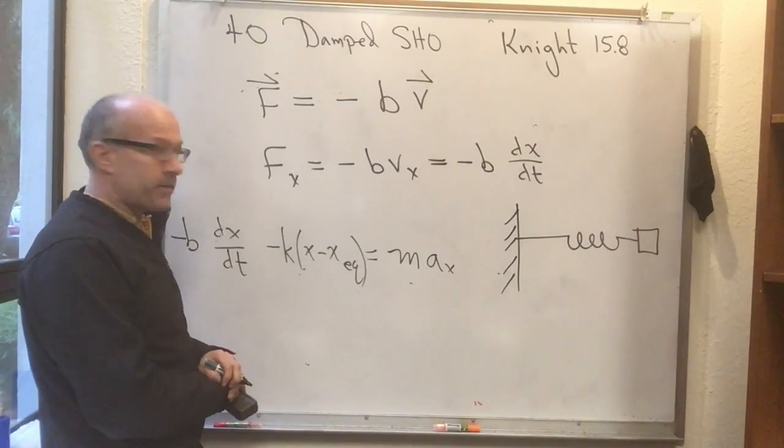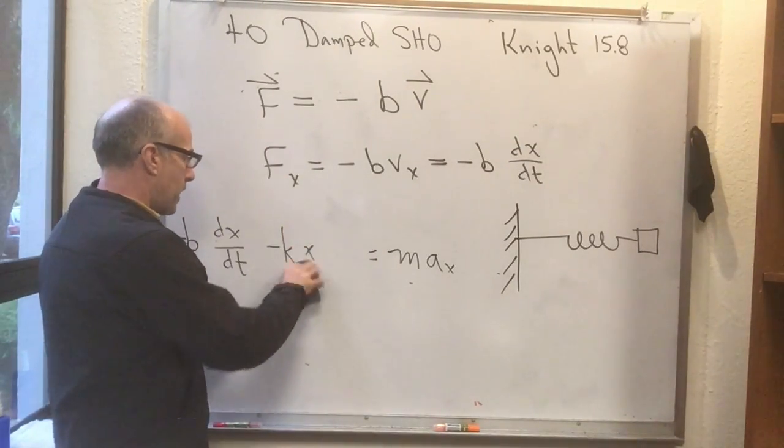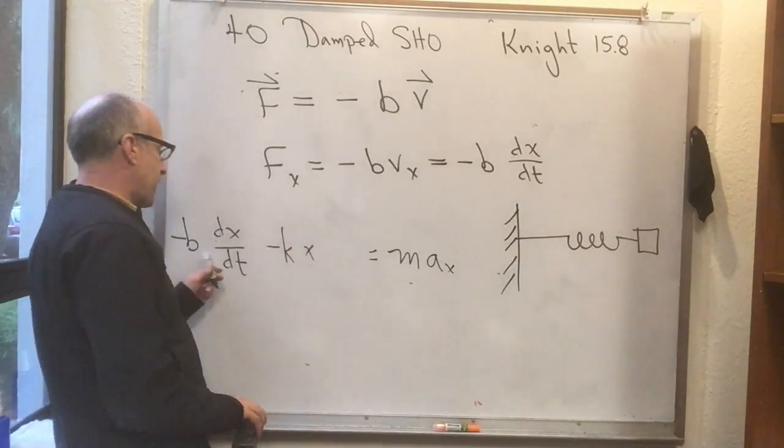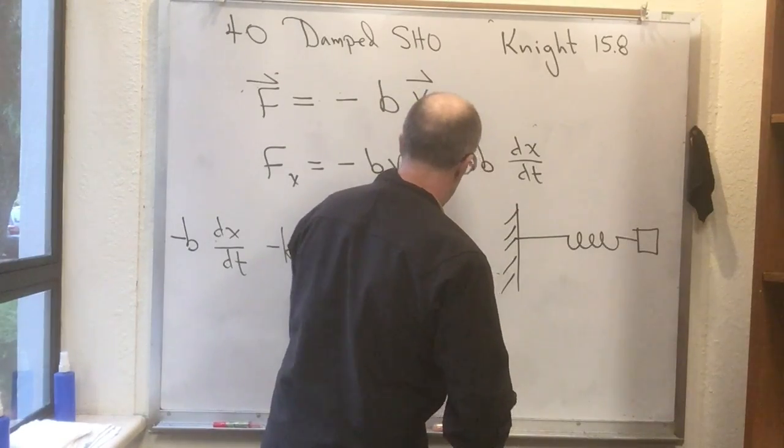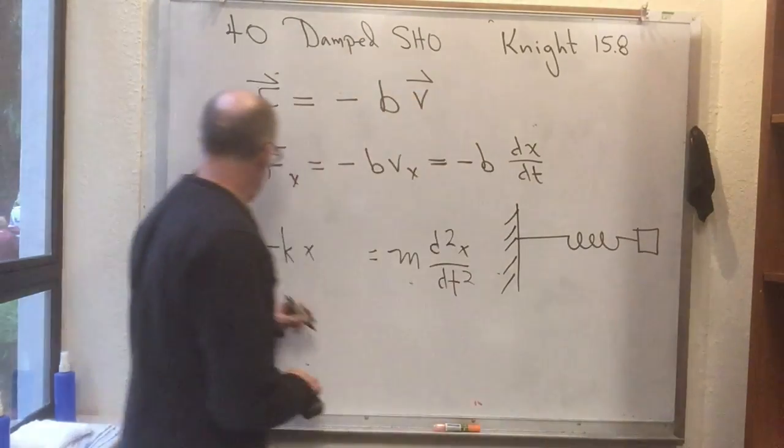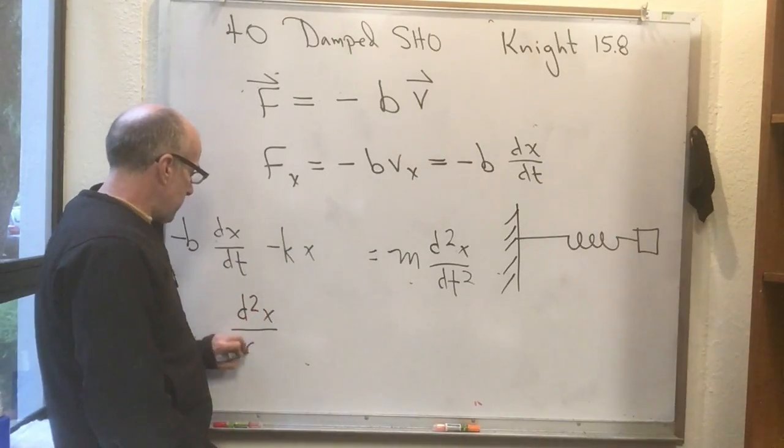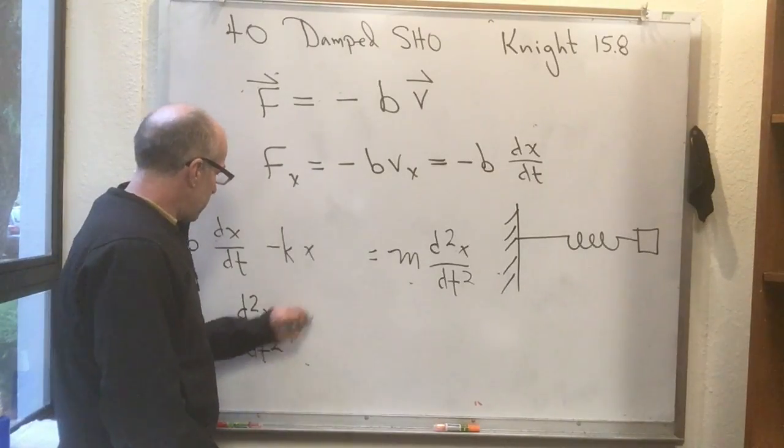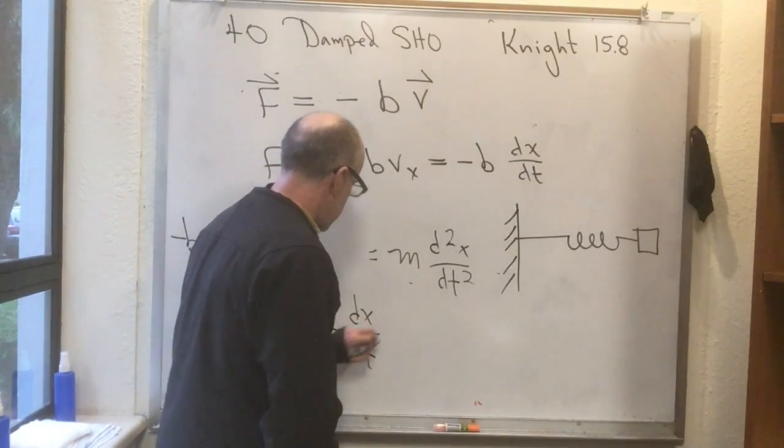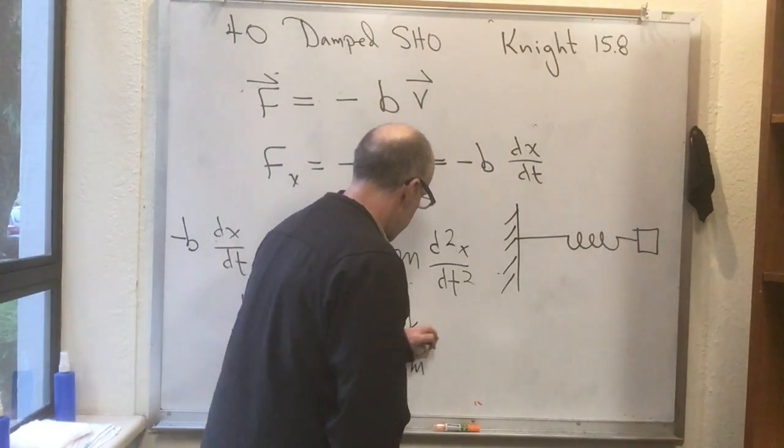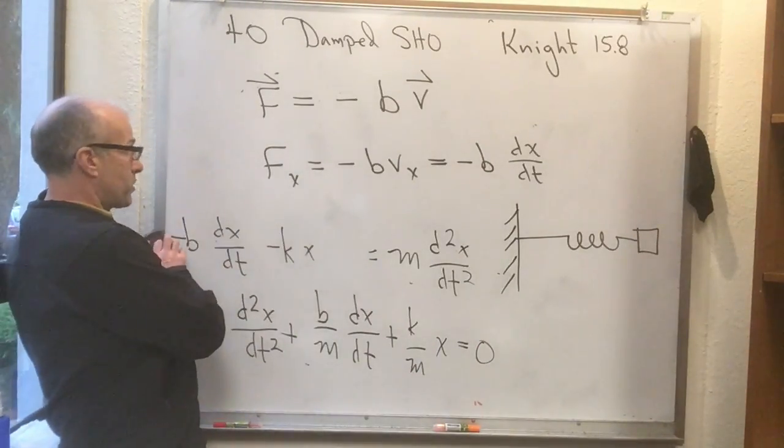Now once again we can make our lives easy by choosing x_eq equal to zero. Let's just do that. We've got enough stuff to carry around without adding that to our lives. a_x of course is d²x/dt². So the equation that we have to solve is usually written as d²x/dt² plus b over m dx/dt plus k over m x equals zero. That's the way you usually see this equation written.